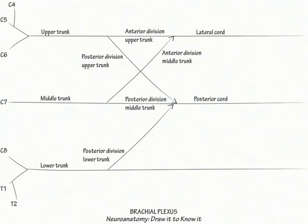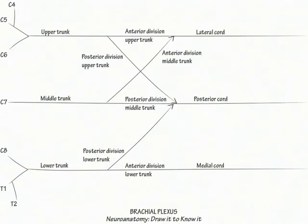At the bottom, label the anterior division of the lower trunk and then the medial cord. The cords are named by their relationship to the axillary artery. Lateral lies lateral to it, medial is medial, and posterior lies behind it.